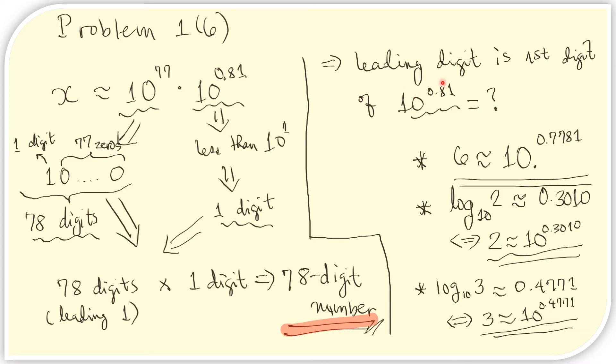Then we are concerned with the leading digit of x. We have already said that the leading digit of x is the same as the first digit of this number, 10 to the 0.81. So we just need to find the first digit of this number. Before we go and do that, let us write down what we know about 6, 2, and 3.